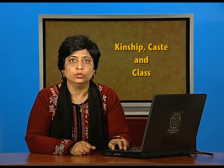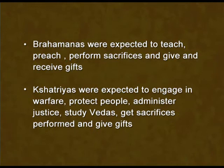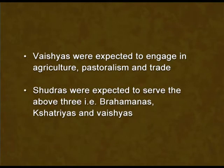The Dharam Shastras and Dharam Sutras prescribed rules about the ideal occupation of these social categories. Brahmanas were expected to teach, preach, perform sacrifices, and give and receive gifts. Kshatriyas were expected to engage in warfare, protect people, administer justice, study Vedas, get sacrifices performed and give gifts. Vaishyas were expected to engage in agriculture, pastoralism and trade. Shudras were expected to serve the above three Varnas.